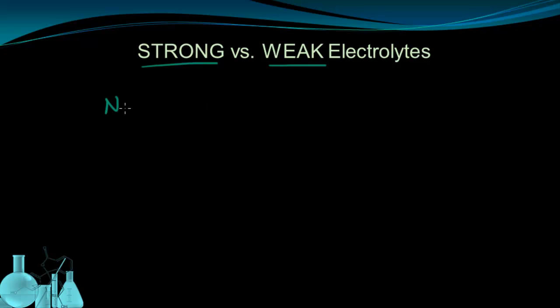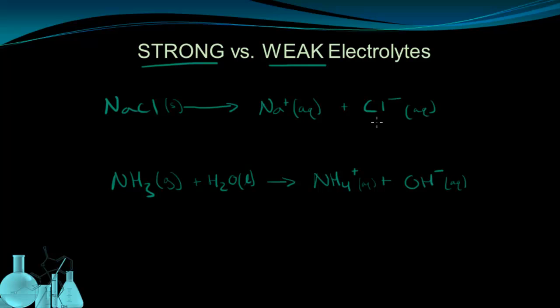I'm going to use the examples of NaCl and ammonia that we just looked at. So here we have the reactions written out again. Table salt, NaCl, dissociates in water into Na+ ions and Cl- ions.